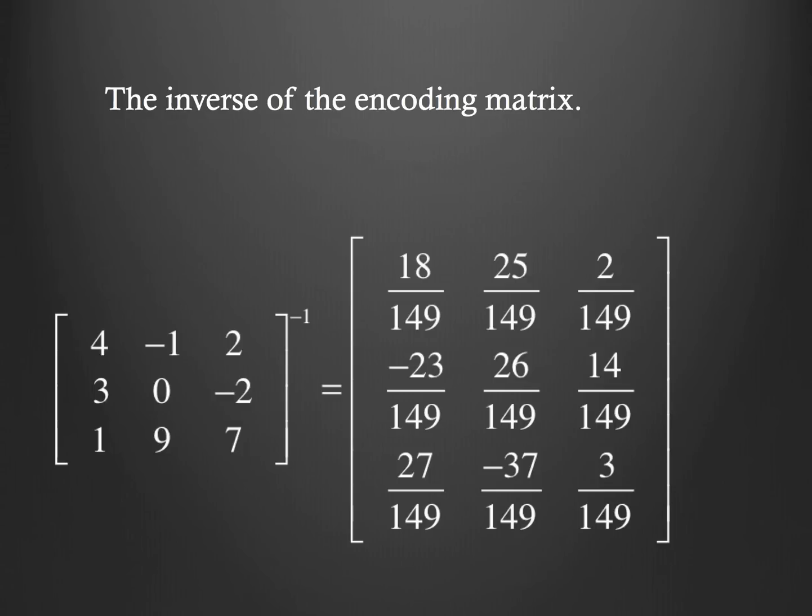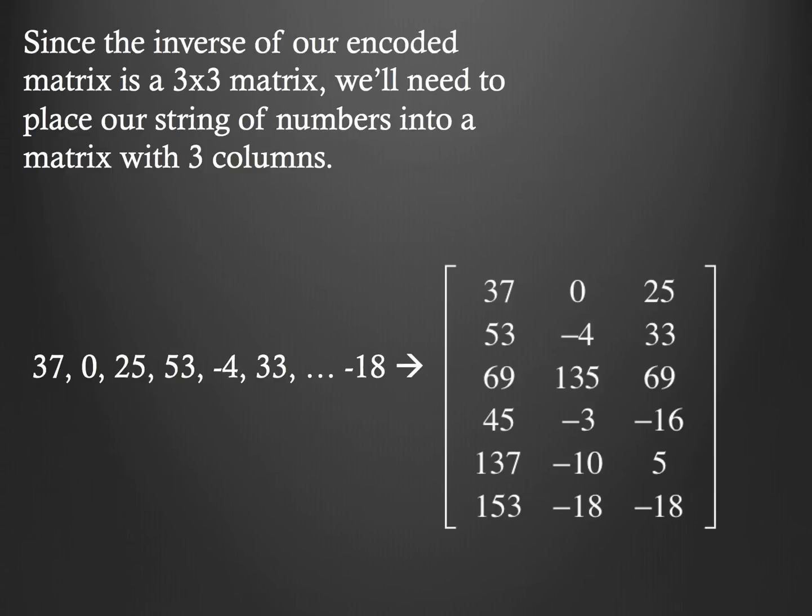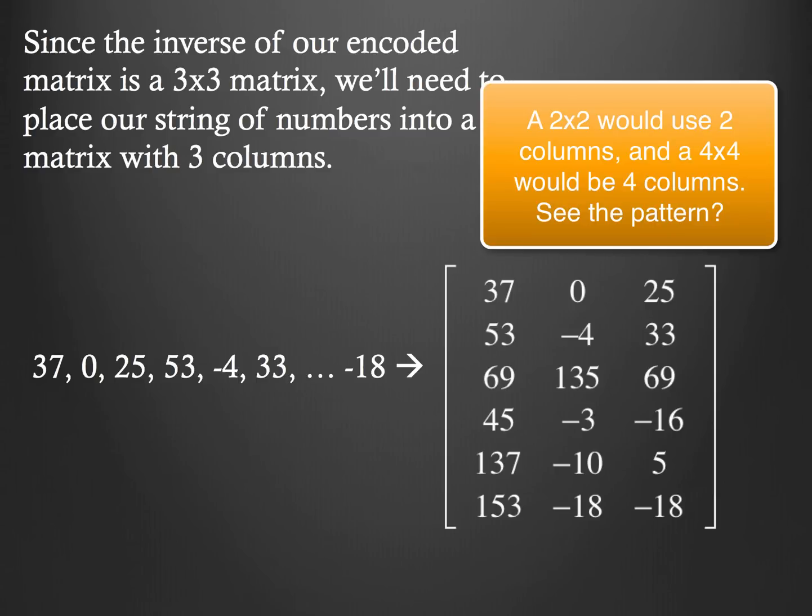One of the things that I want to notice about my inverse of my encoding matrix, check it out. The dimensions, I've got a 3 by 3 matrix. So, that tells me, if I'm the person decoding, when I go to take my string of numbers and write it into another matrix, I'm going to need to do something here that's going to help me with a 3 by 3 matrix. So, check this out. Since the inverse of our encoded matrix is a 3 by 3 matrix, we'll need to place our string of numbers into a matrix with 3 columns. Well, that doesn't seem so bad. So, we just go ahead and do that. 37, 0, 25, and so on, all the way down to our last, negative 18. So, we're going to put that string of numbers into a matrix that's got 3 columns.